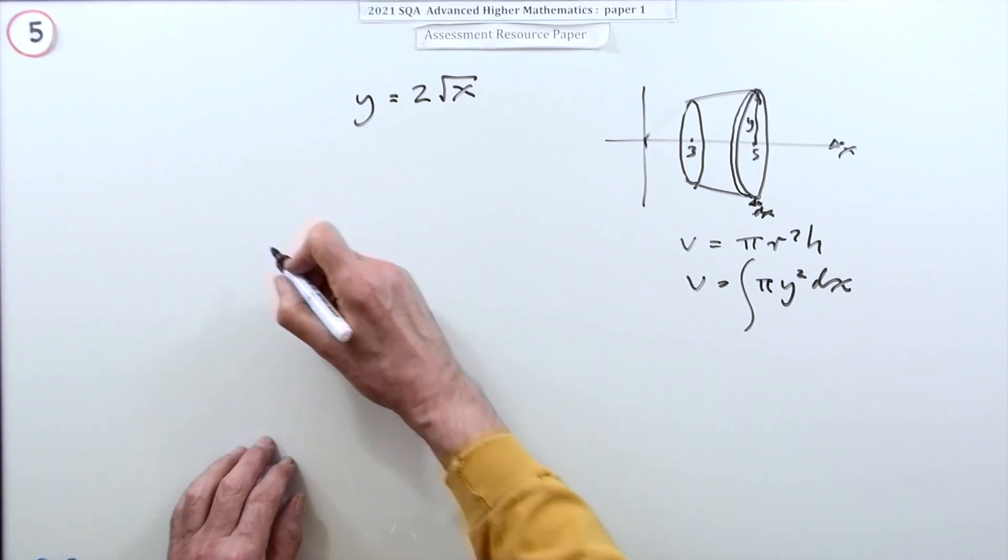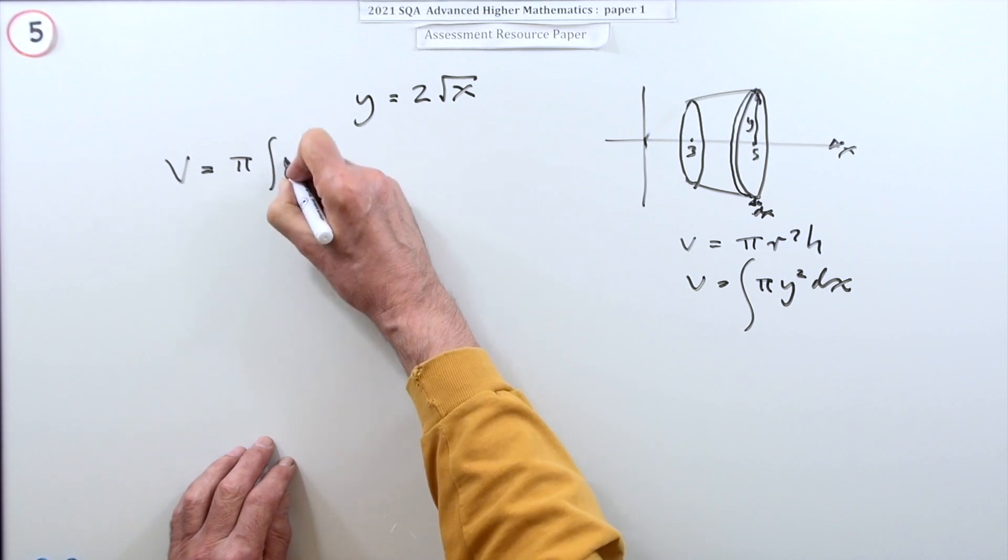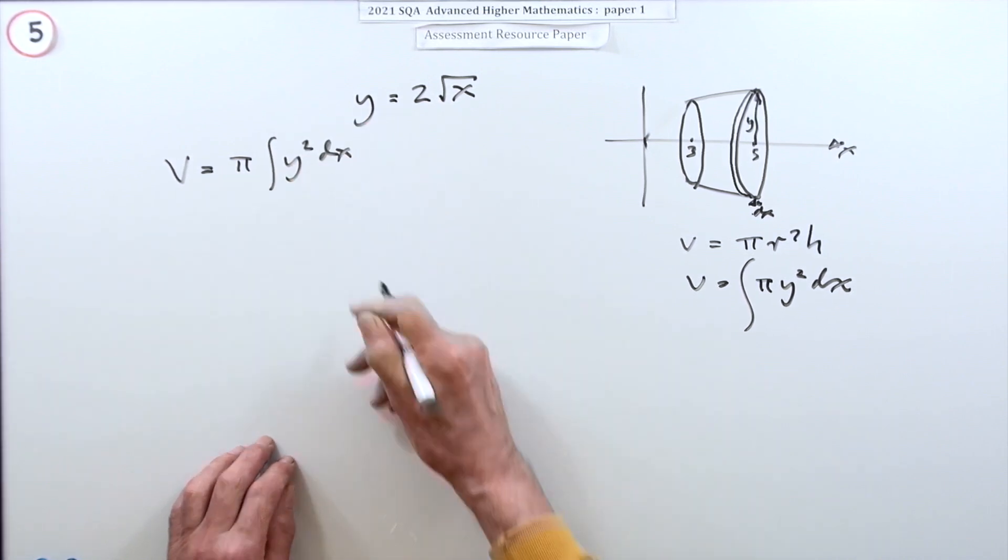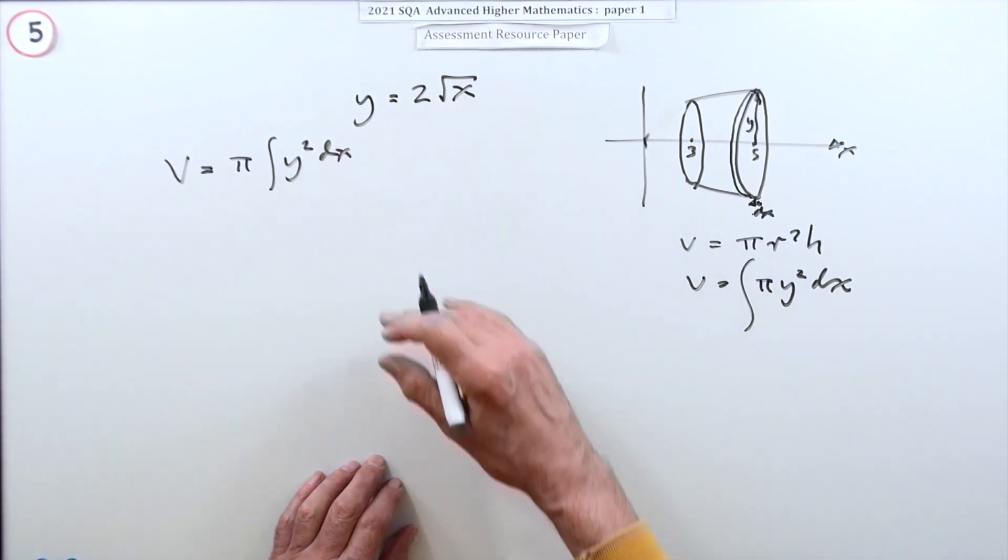So that's what you just put down. So you put down V equals, may as well take that pi out. Pi y squared dx, because it was rotating about the x-axis so the y was the radius. It's just pi r squared h.